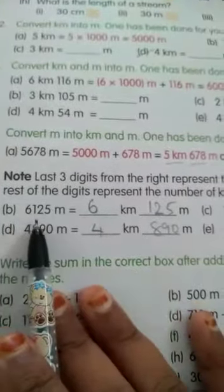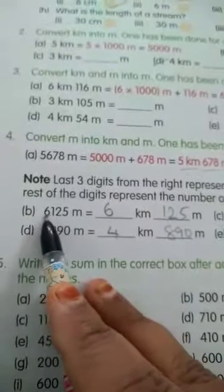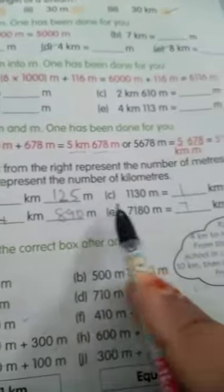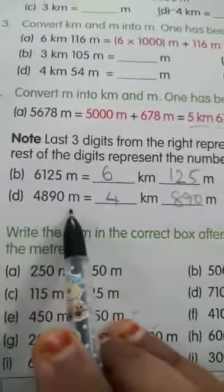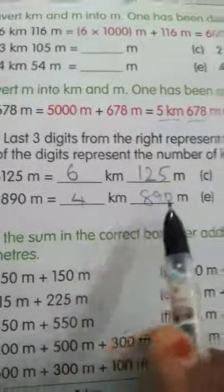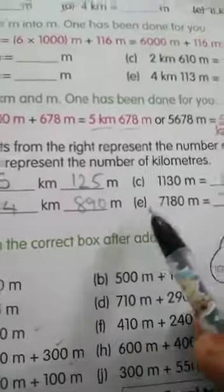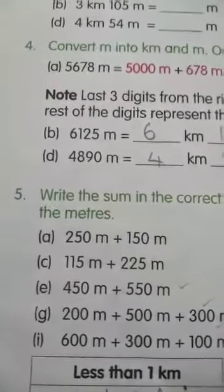So here the second question: 6125 meter equals to dash kilometer dash meter. So this is 6 kilometer and 125 meter. C: 1130 meter equals to dash kilometer dash meter. So 1 kilometer 130 meter. D: 4890 meter equals to dash kilometer dash meter. So 4 kilometer 890 meter. Similarly, E you practice in your class work. So with this we have completed the fourth bit also.